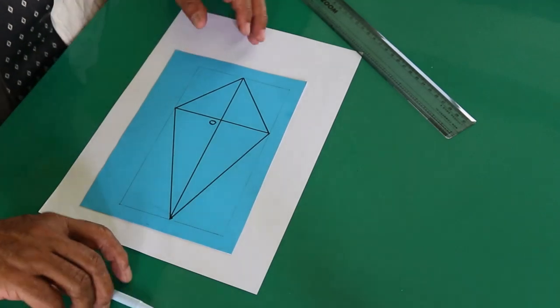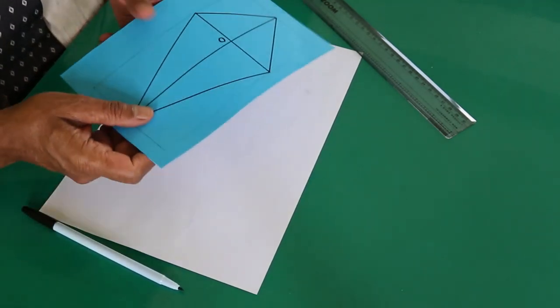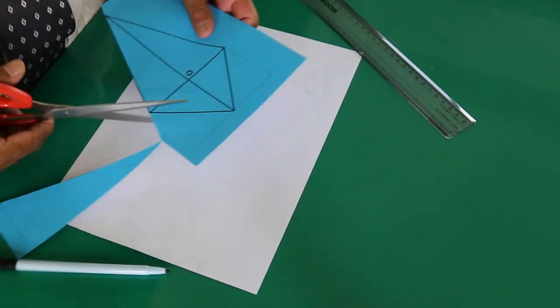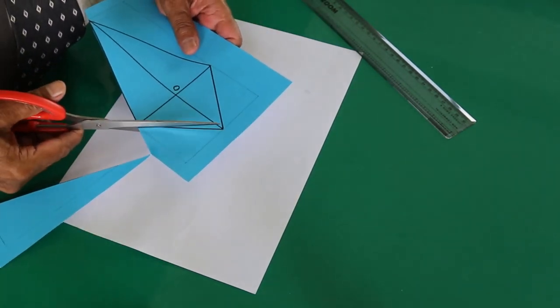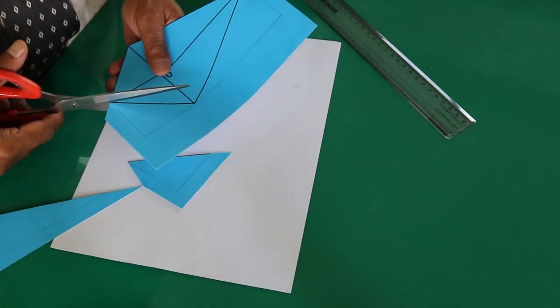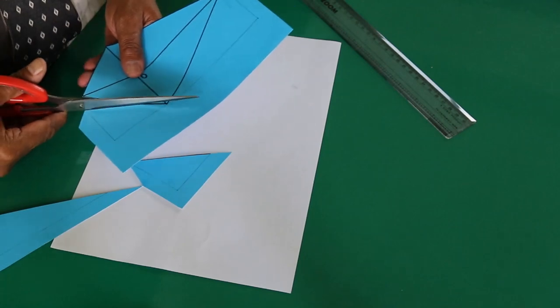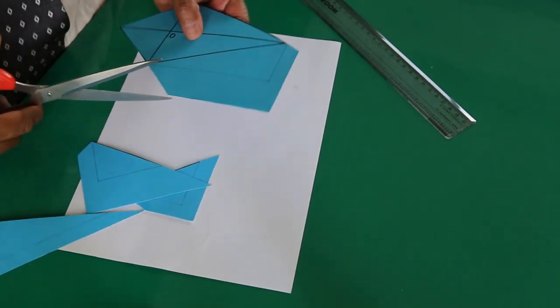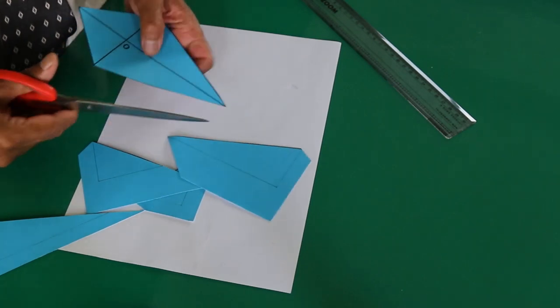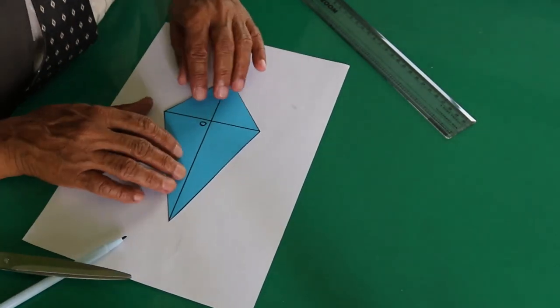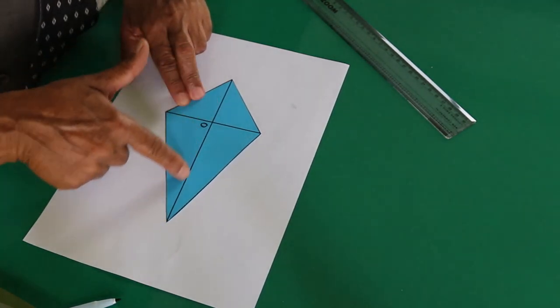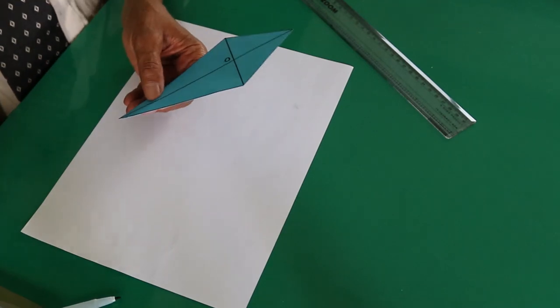Now take out this kite. Now cut along this diagonal, along the longest diagonal. You cut the kite into two congruent halves.